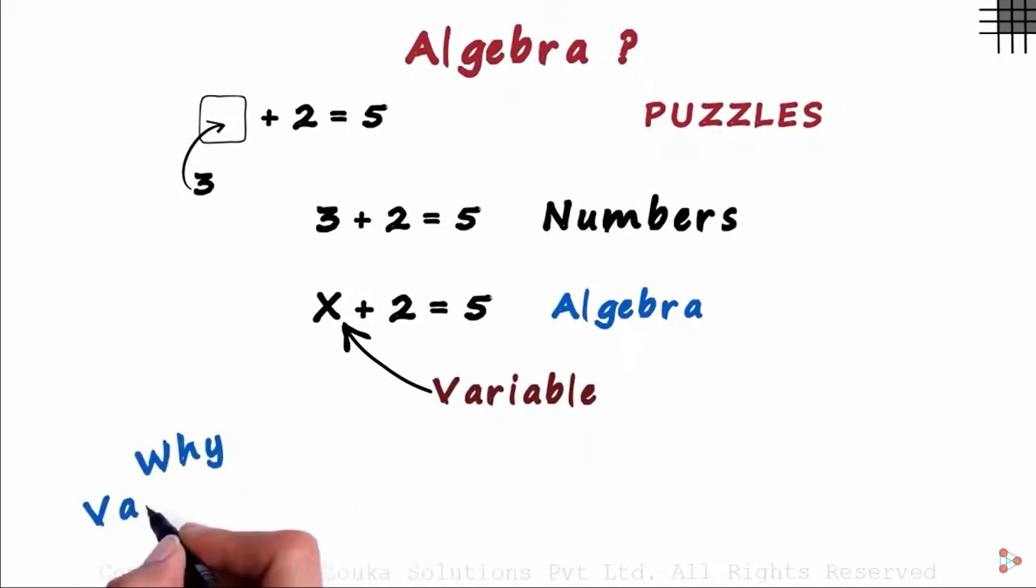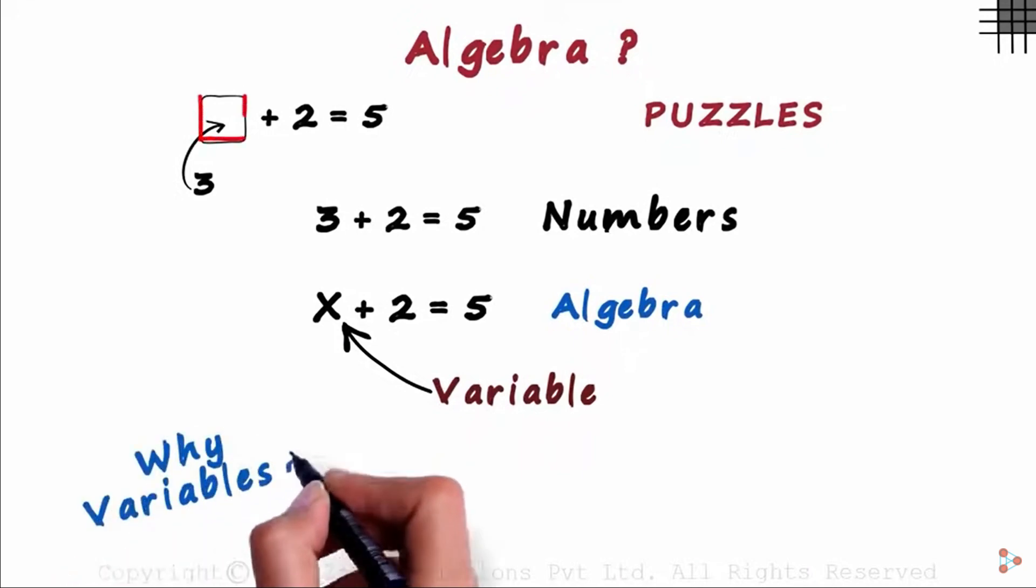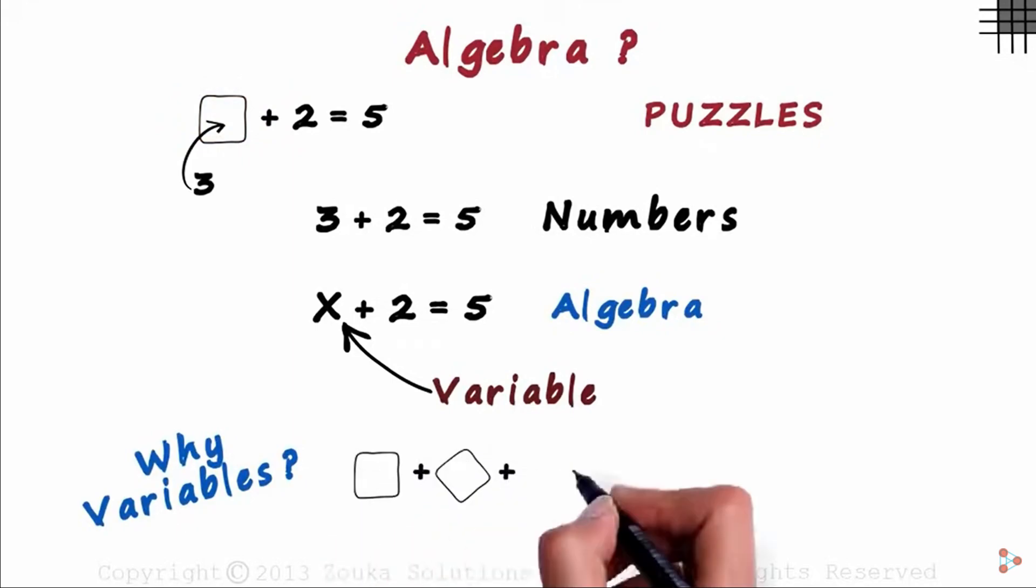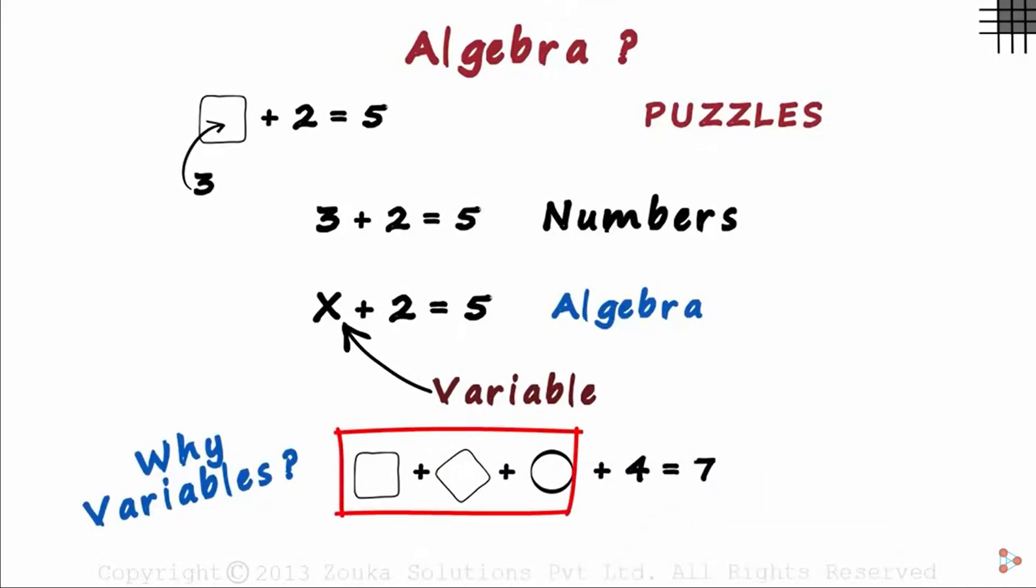But why use variables? Why not boxes like these? Let's assume there are 3 unknown numbers. Using shapes, we can write it as a square plus a slant square plus an empty circle plus 4 equals 7. You had to think of different shapes.